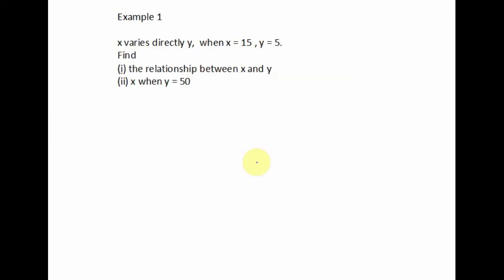Example one says x varies directly as y. When x is equal to 15, y is equal to 5. We need to find the relationship between x and y, and find x when y is equal to 50. First, write out the mathematical expression: x varies directly as y, so we equate this with a proportional constant.